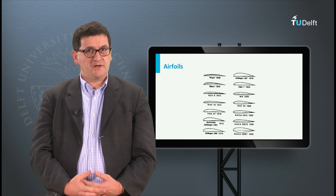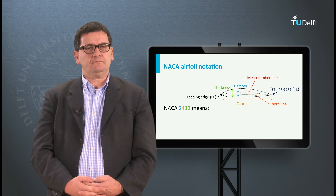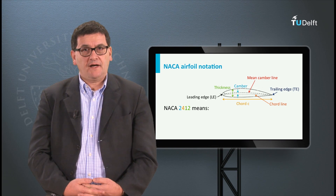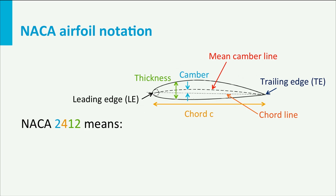NACA stands for National Advisory Committee for Aeronautics, a committee founded in the US. NACA airfoils are identified by a specific four-digit number. In the figure you can see a number of features of an airfoil like the positions of the leading edge, the trailing edge, the chord line and its length, the profile thickness and the camber. Some of the dimensions of these features are represented in the NACA number. Note that all dimensions are expressed as a percentage or fraction of the chord length.